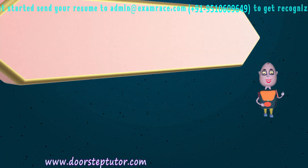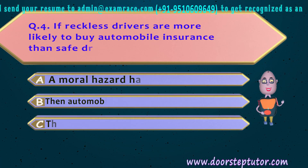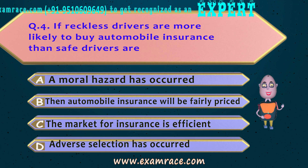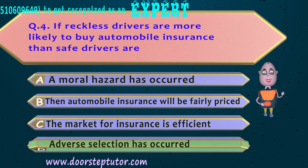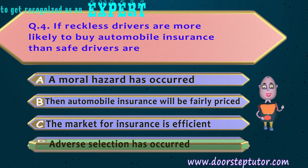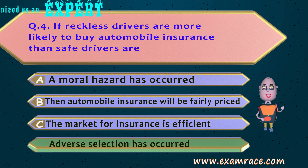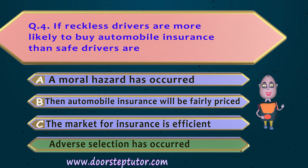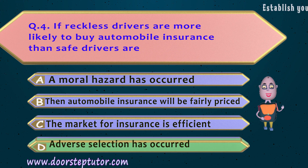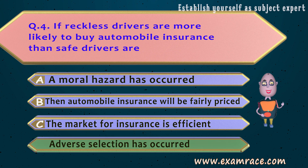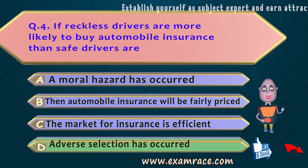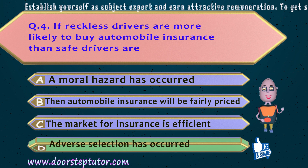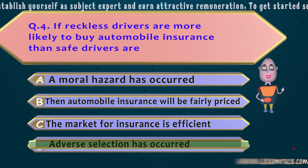The next question: if reckless drivers are more likely to buy automobile insurance than safe drivers are, this means adverse selection has occurred — option D. Similar to how people who are more at risk of health problems are more likely to get health insurance, reckless drivers are more likely to buy automobile insurance than safe drivers.